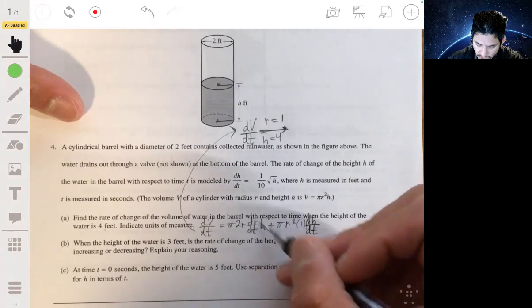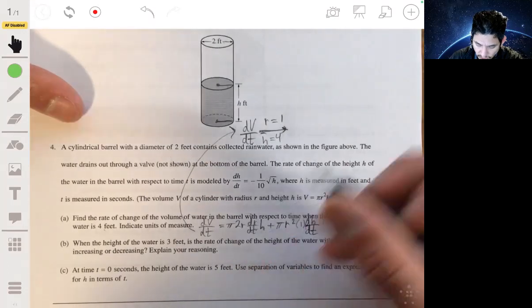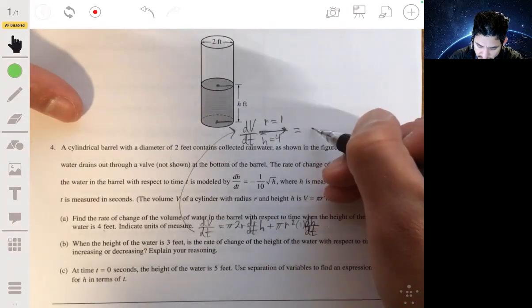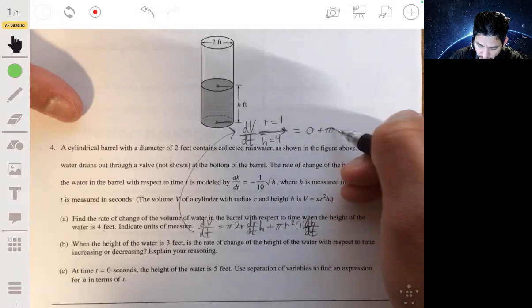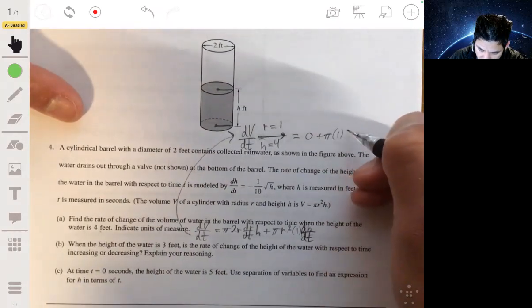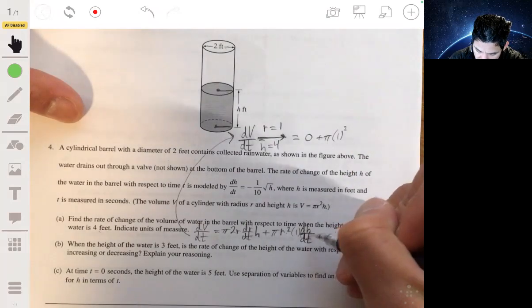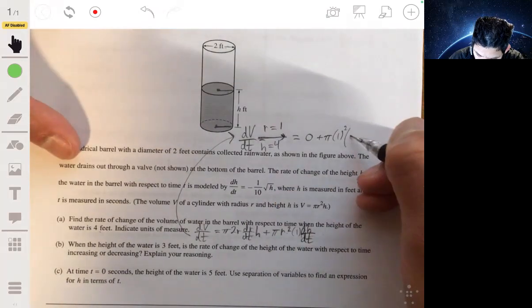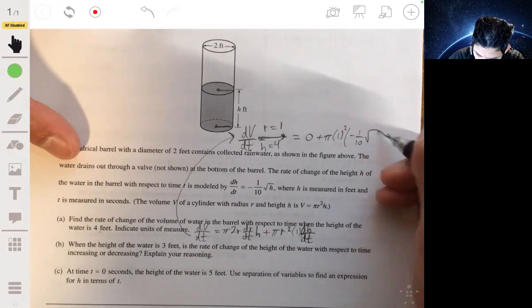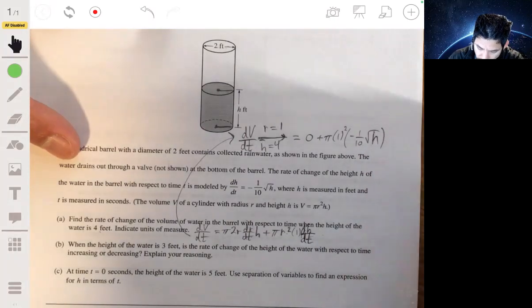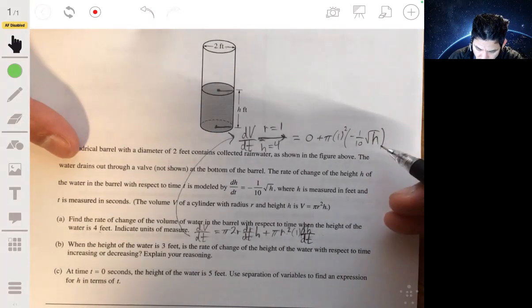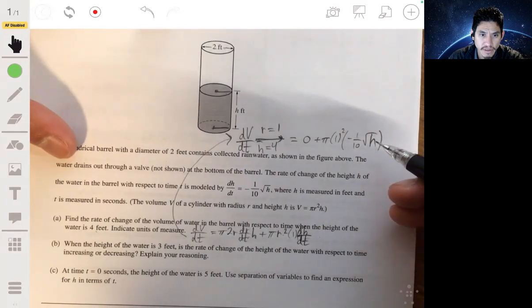So this all falls away. Like this becomes 0, that means all this doesn't become anything. So this is just 0 plus pi r squared or pi times 1 squared times dh/dt times negative 1 tenth square root of h.